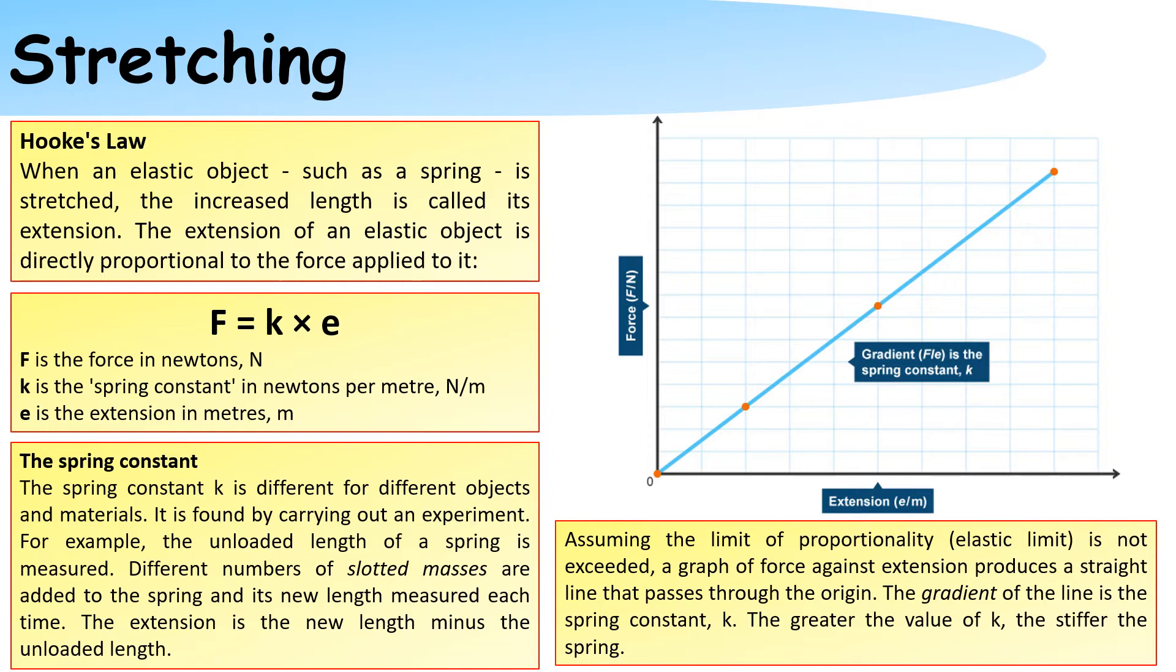Assuming the limit of proportionality is not exceeded, a graph of force against extension produces a straight line that passes through the origin. The gradient of the line is the spring constant. The greater the value of k, the stiffer the spring is.